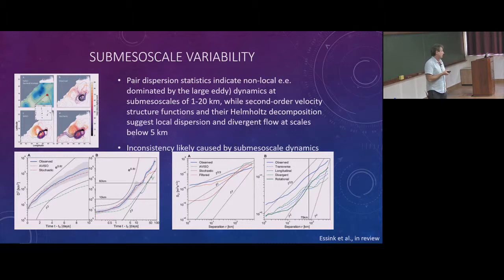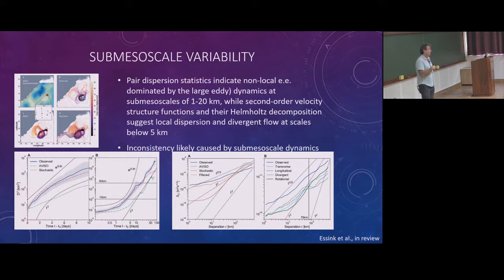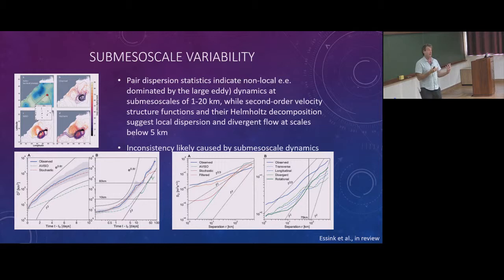One of Amla's students has also been looking into the dispersion properties and kinematics of the surface flow from the drifters dataset, using different analysis techniques. We're finding contrasting results depending on how you compute the dispersion statistics. If you look at pair statistics, it looks like large-scale eddy dynamics dominate, whereas if you look at structural functions, smaller-scale processes seem much more important. So we're trying to reconcile those two findings.